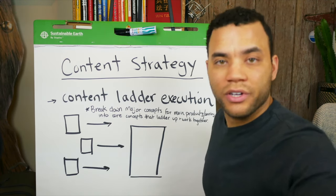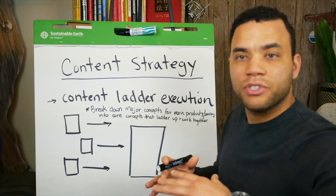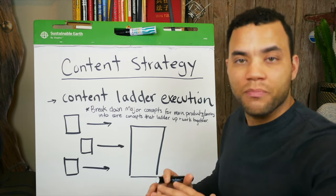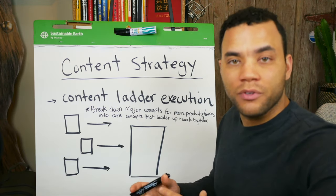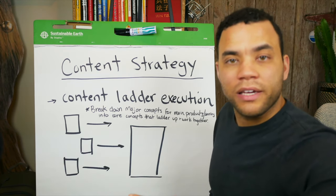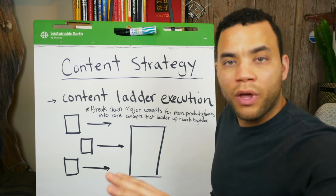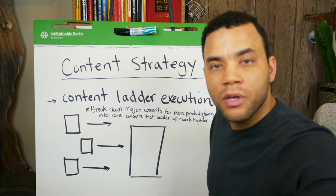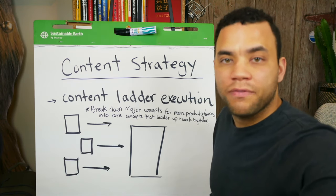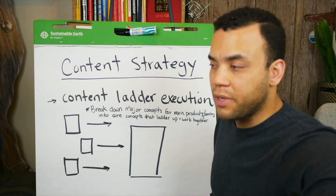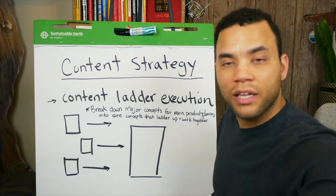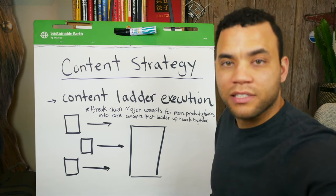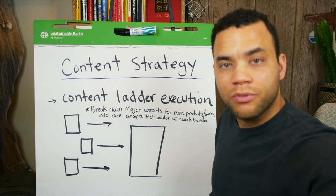Instead of looking at your content strategy as some giant big ordeal — and honestly sometimes a mess if you look at it like that — don't look at it like that. Take it as: I have one major thing I want to deliver on. You can break that down into three to five subcomponents. Make a list. You're selling X — how do you break X down into X sub 1, X sub 2, X sub 3?